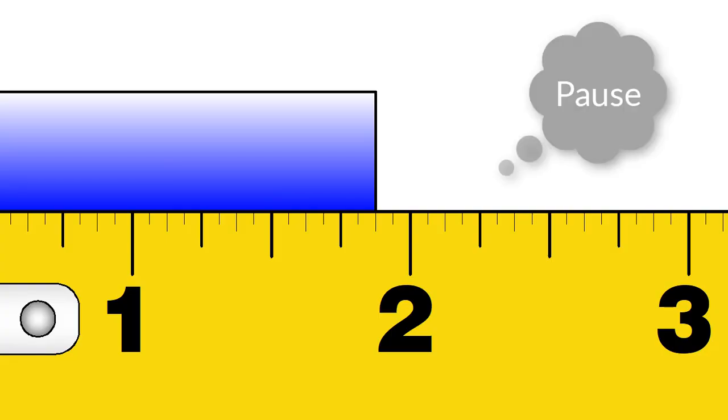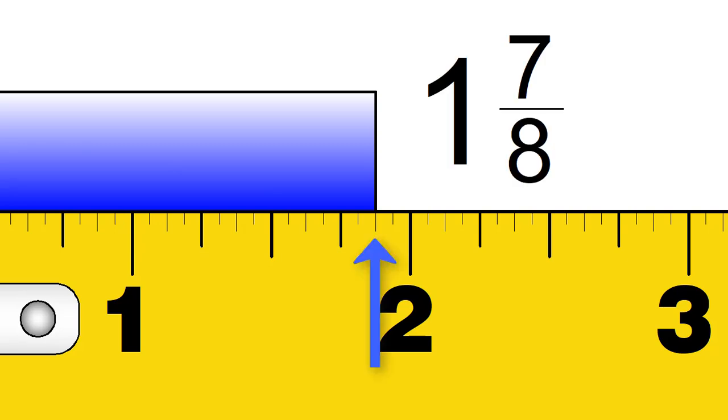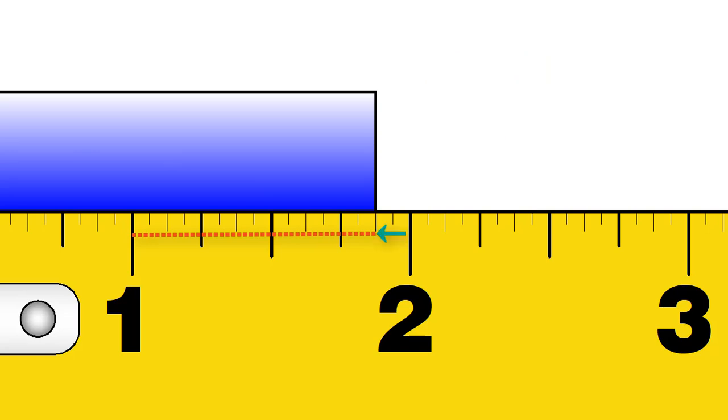Here is another. This one is one and seven eighths. See how close it is to two? You could say that two was eight eighths, and then move to the left one mark to get seven eighths. Try this one.